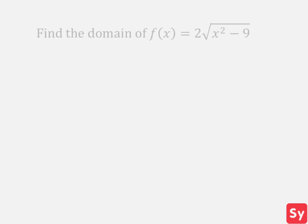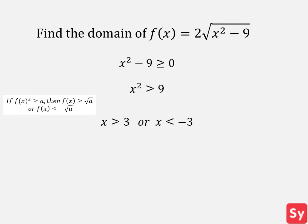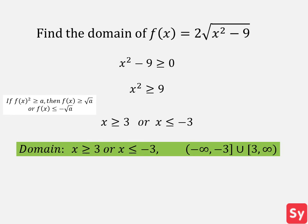Next example: we want to find the domain of 2 times the square root of x squared minus 9. Since it is a square root, we take the expression inside the radical and set it greater than or equal to zero. Next, we add 9 to both sides. For our next step, we'll use this handy identity. So we get x is greater than or equal to 3, or x is less than or equal to negative 3. That is our domain.